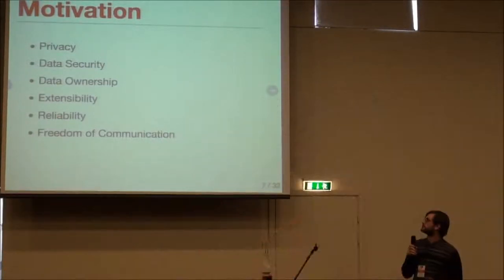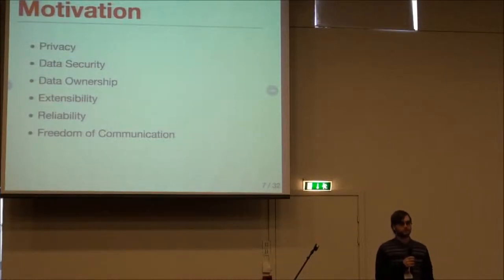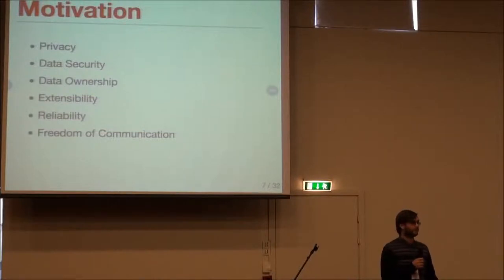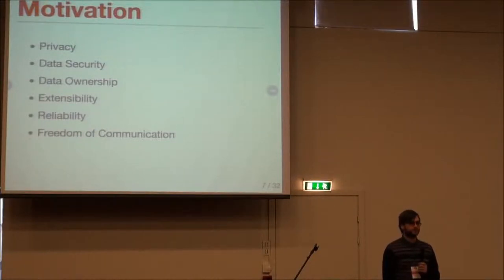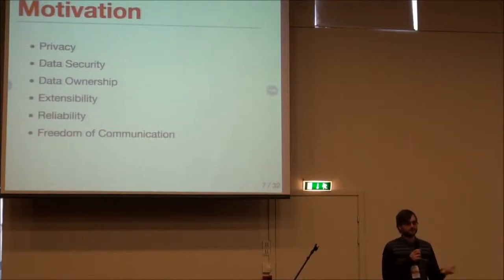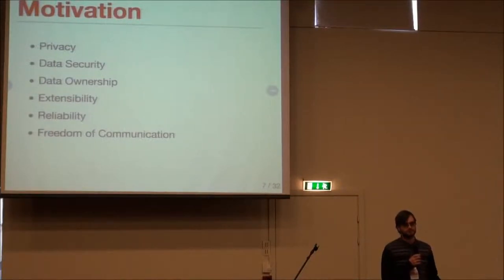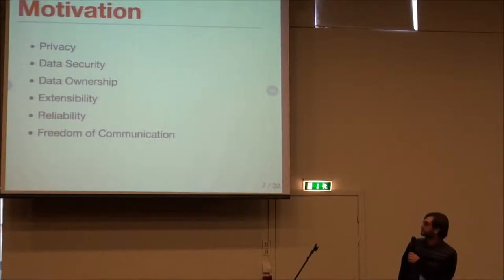The next point is extensibility. All of the social networks existing today are proprietary technology controlled by corporations. You can build something on top of the API they provide, but you can't really extend the network itself from the core. Then there is reliability — talking about security breaches, you cannot really rely on the consistency or personal security. They try to guarantee the availability of your profile all the time, but still there are breaches happening and a lot of problems can occur.